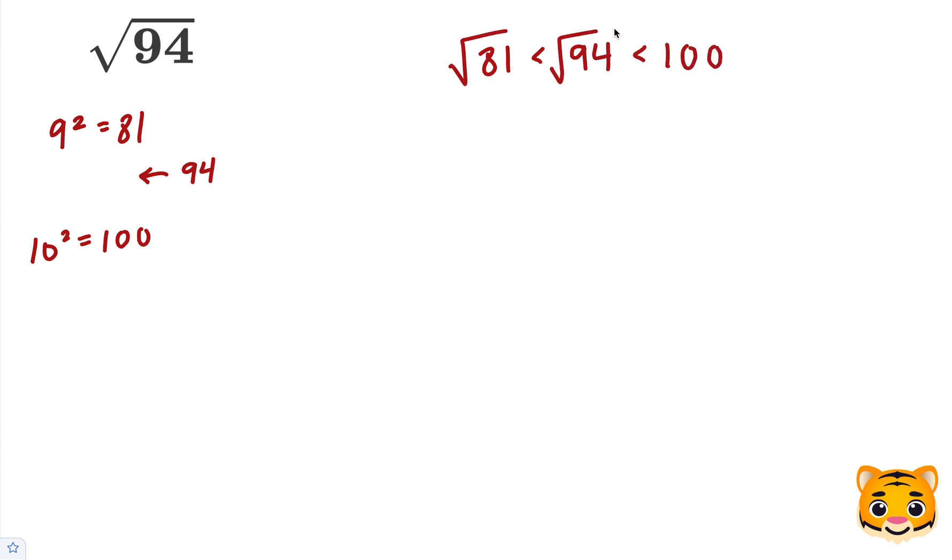Now we can take the square root of all these values. The square root of 81 is 9, because 9 squared is 81. The square root of 100 is 10, because 10 squared is 100. Now we can see that the square root of 94 lies between 9 and 10.